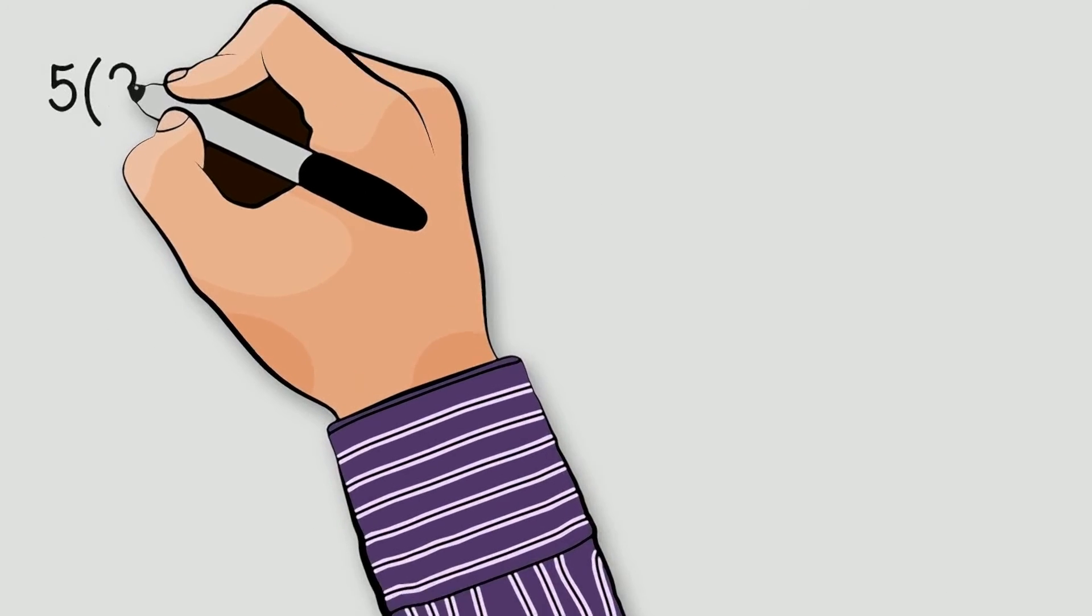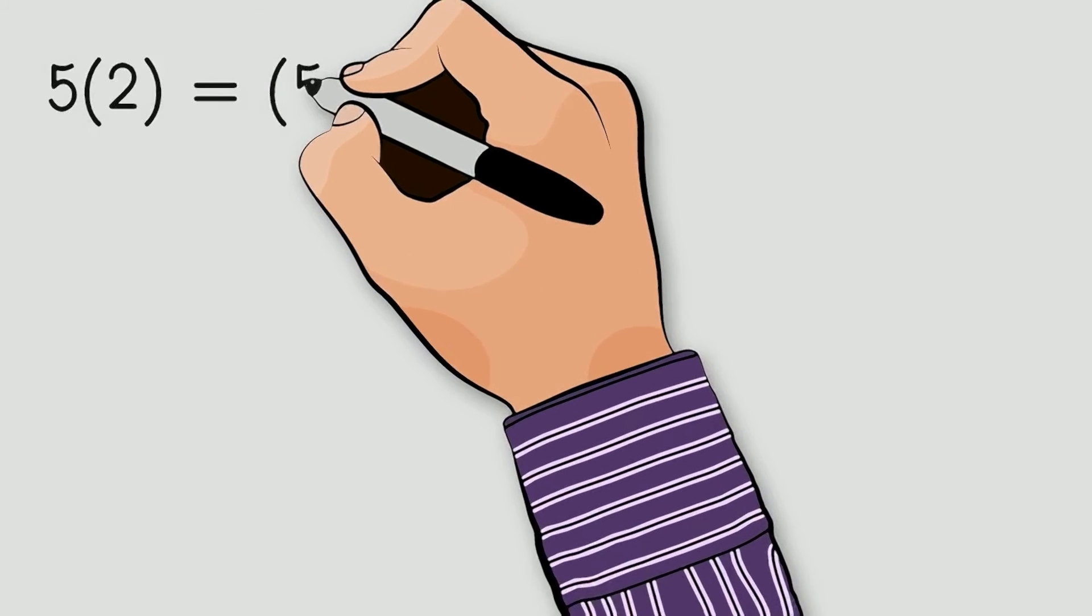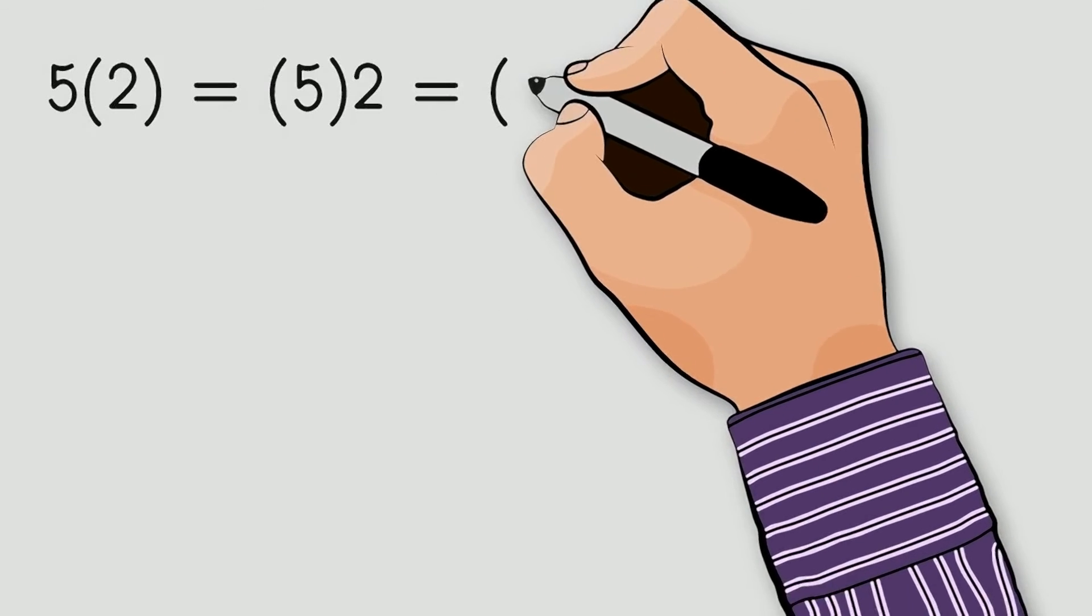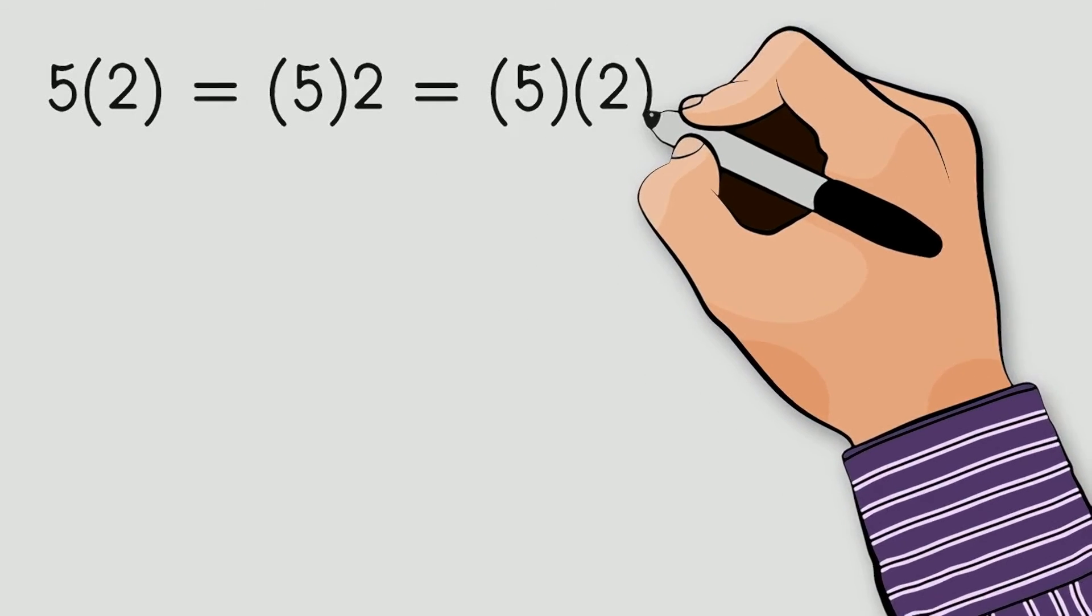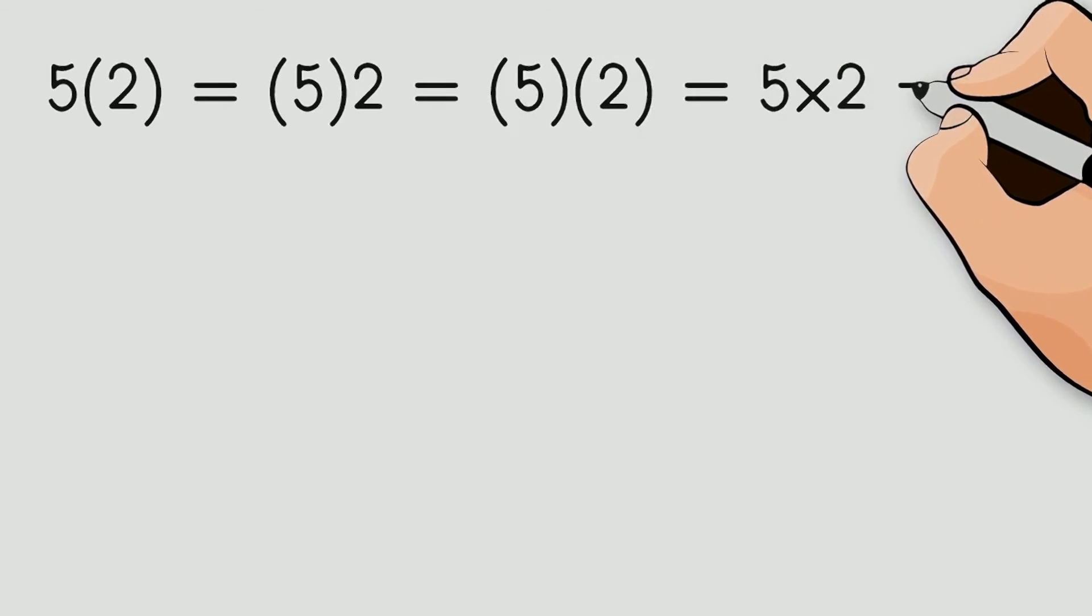When we see, for example, the parentheses are telling us to multiply the 5 and the 2 together. We can write 5 times 2 in 4 different ways. All of these are multiplication problems, and they all equal 10.